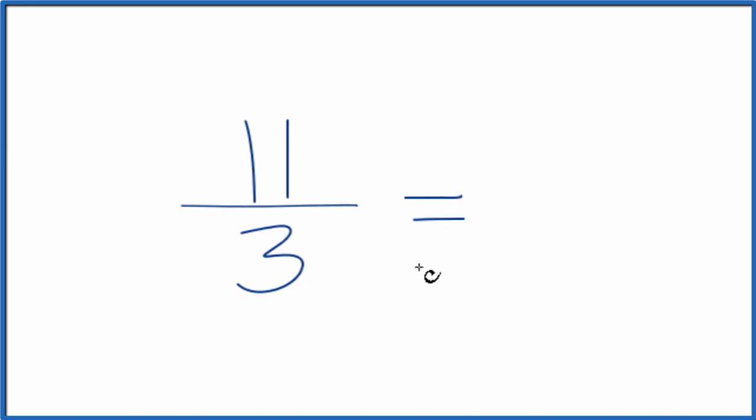So we're looking for the greatest common factor between 11 and 3. It turns out that the greatest common factor, the number that goes into both 11 and 3, is 1. So we divide 11 by 1, we get 11. We divide 3 by 1, we get 3.